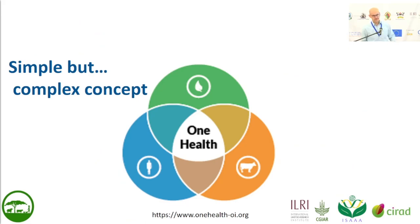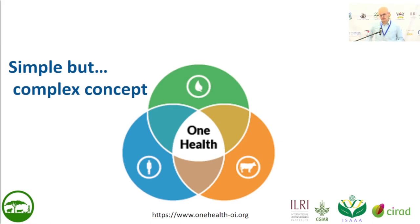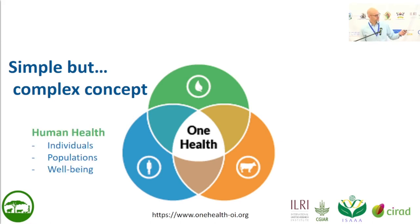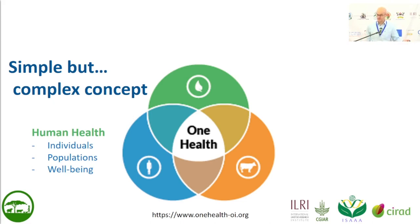The classic representation of the One Health concept is a three-component graphic. The first component is the human health component — we're talking about the health of individuals and populations, and as Salome just said, we're also talking about the well-being and mental health of people.